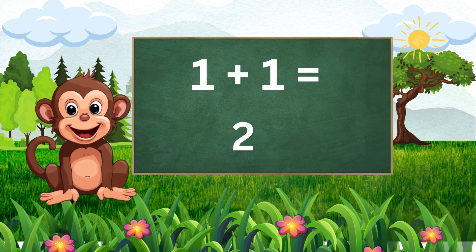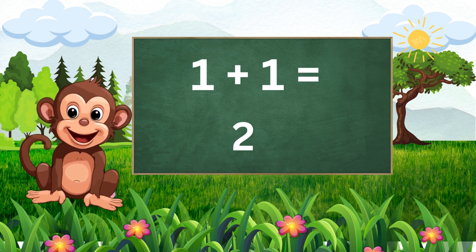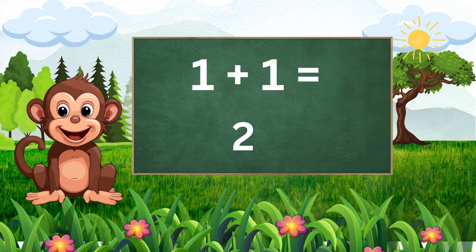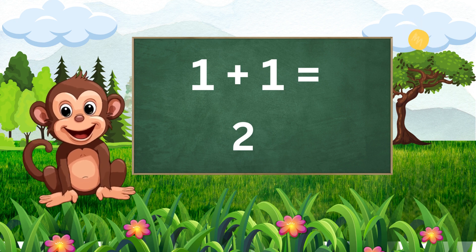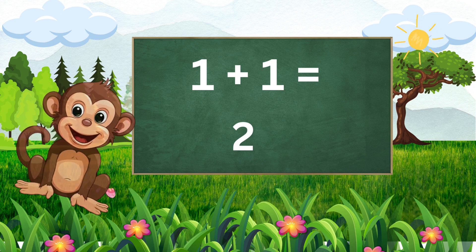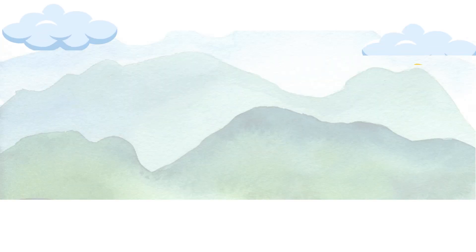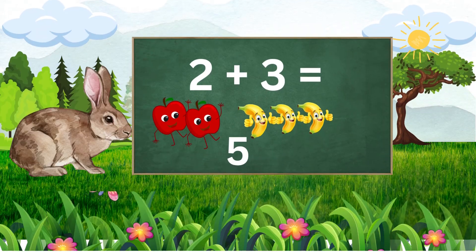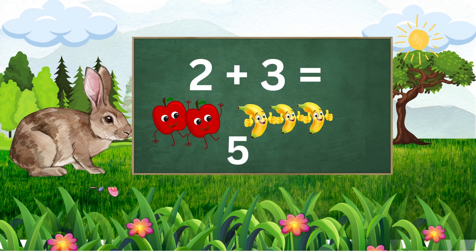Now let's see if you can solve this one. If we have two apples and three bananas, how many fruit do we have altogether? I know, I know — we have five fruit.